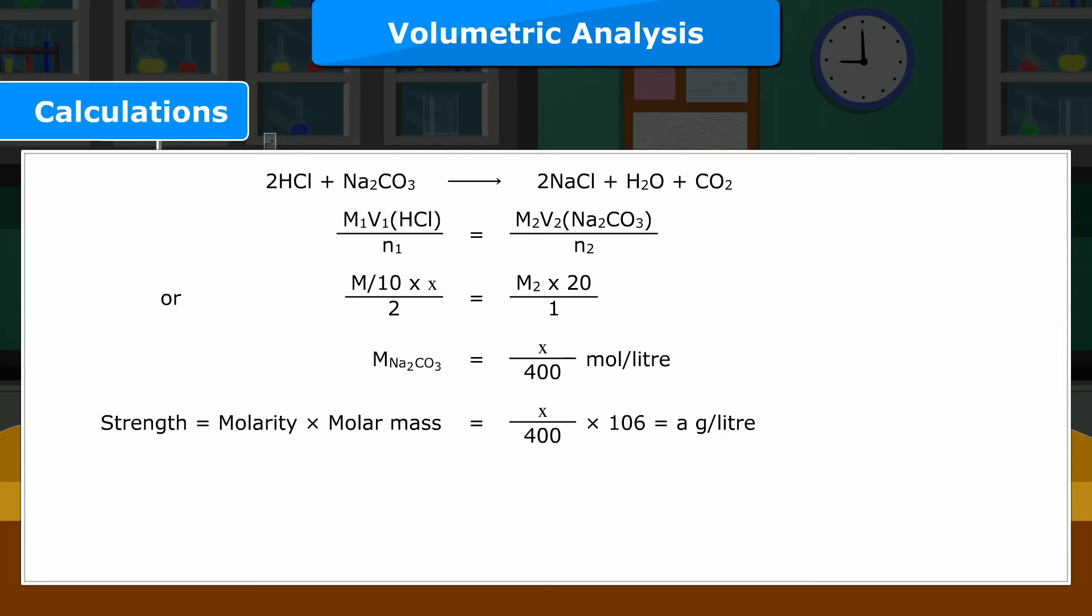Strength is equal to Molarity into Molar mass is equal to X upon 400 into 106 is equal to A gram per litre. Percentage Purity is equal to strength of pure Na2CO3 upon strength of given solution into 100 is equal to A upon 11 into 100 is equal to dash percent.